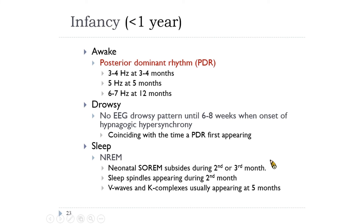The awake posterior dominant rhythm (PDR) first establishes at age 3 to 4 months at 3 to 4 Hz, 5 Hz at 5 months, and 6 Hz at 1 year. No EEG drowsy pattern appears until 6 to 8 weeks, when onset of hypnagogic hypersynchrony coincides with the time the PDR first appears. Neonatal sleep-onset REM subsides during the 2nd or 3rd month. Sleep spindles appear during the 2nd month. Vertex sharp waves and K-complexes usually occur at 5 months of age.